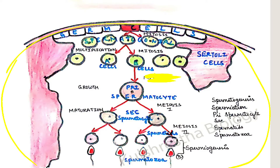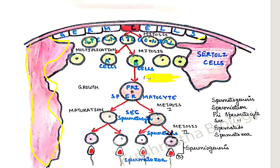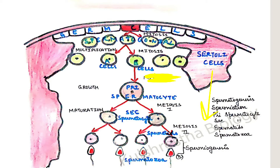The outer layer of the seminiferous tubule is the germinal epithelium. It contains two types of cells: germ cells and Sertoli cells. The germinal epithelium is made up of germ cells and Sertoli cells. Now, the Sertoli cells will provide nutrition and mechanical support to all the developing germ cells.